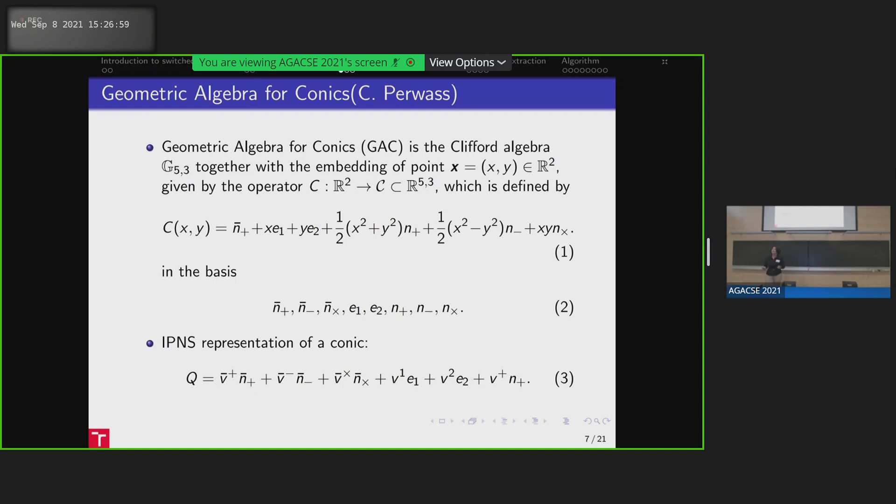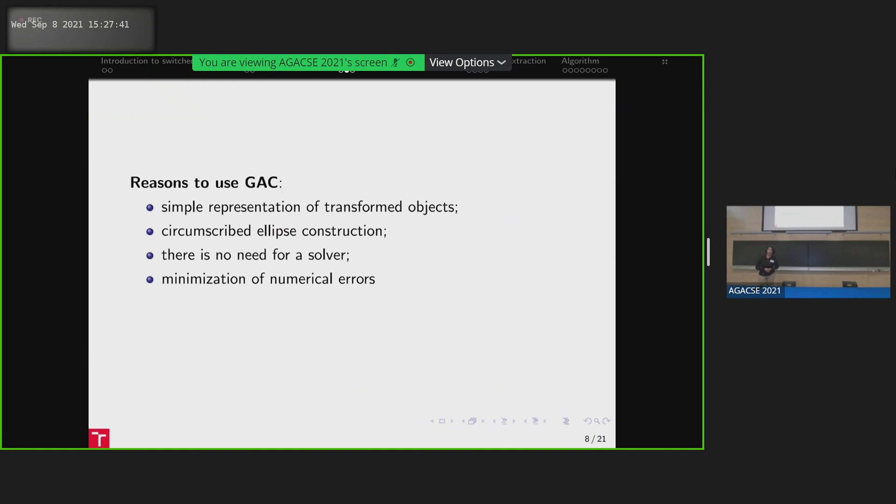Geometric algebra for conics introduced by Pervas is the Clifford algebra C_3,3. So as we consider the basis, we have three origins, three infinities, and special embedding. And why are we interested in that? Because it's a simple way to play with conics. Why do we need conics? Because our two by two systems are usually described by a conic. So we have here the IPNS representation, which we will use in the future. I will remind when it will be needed.